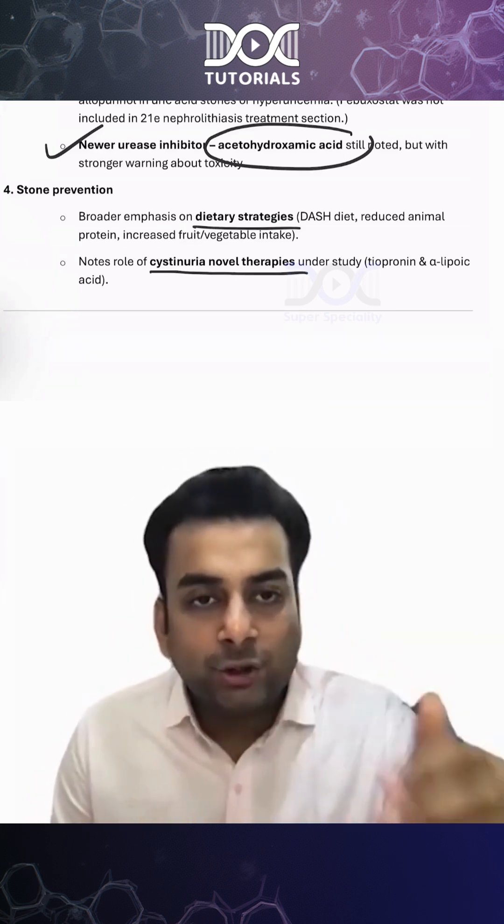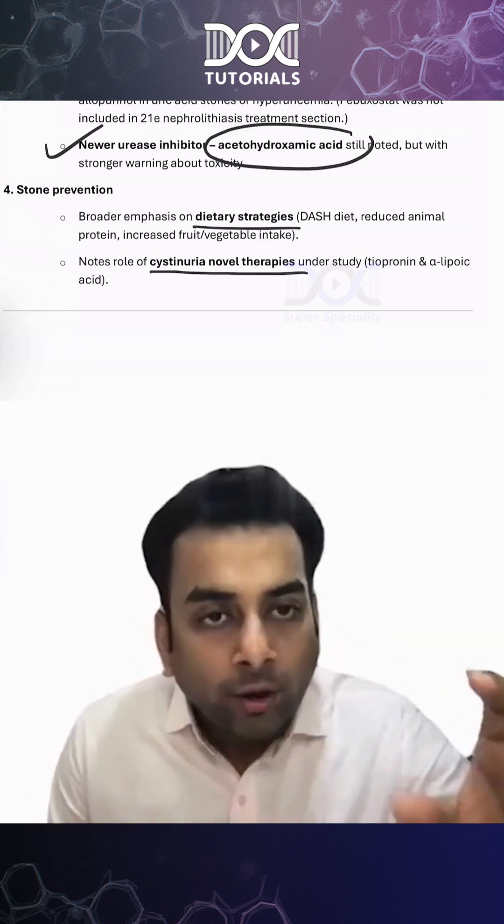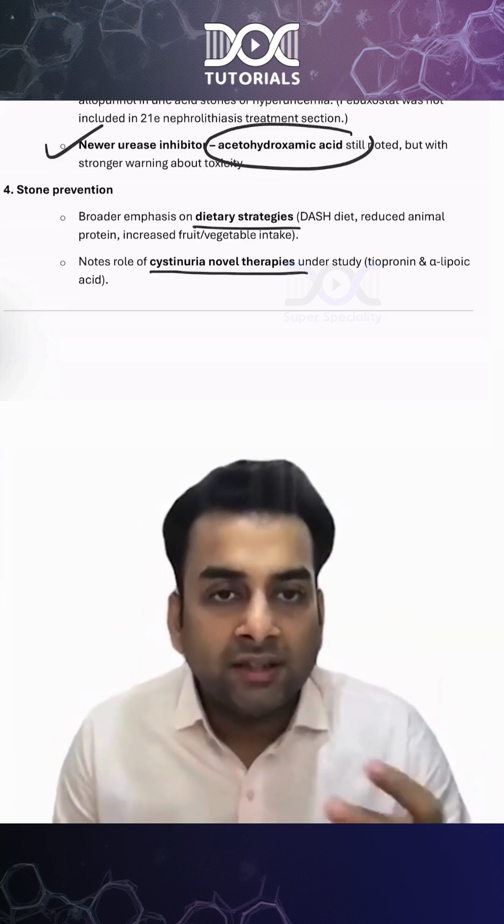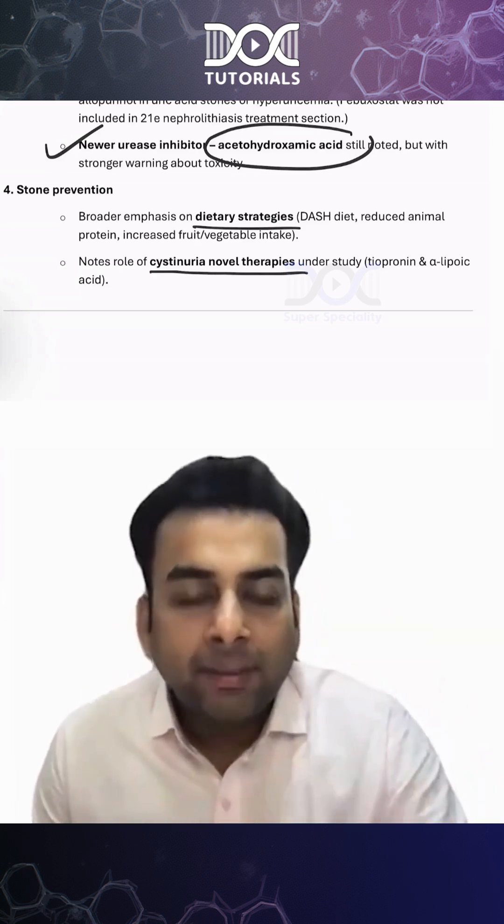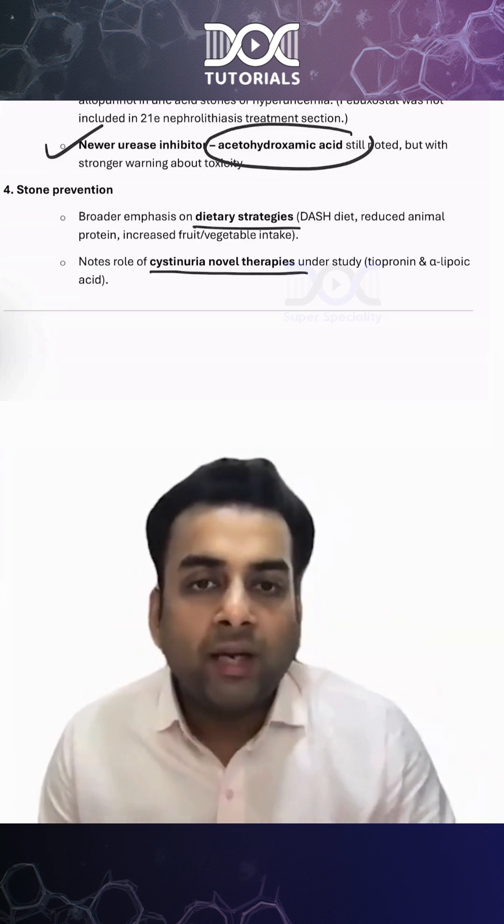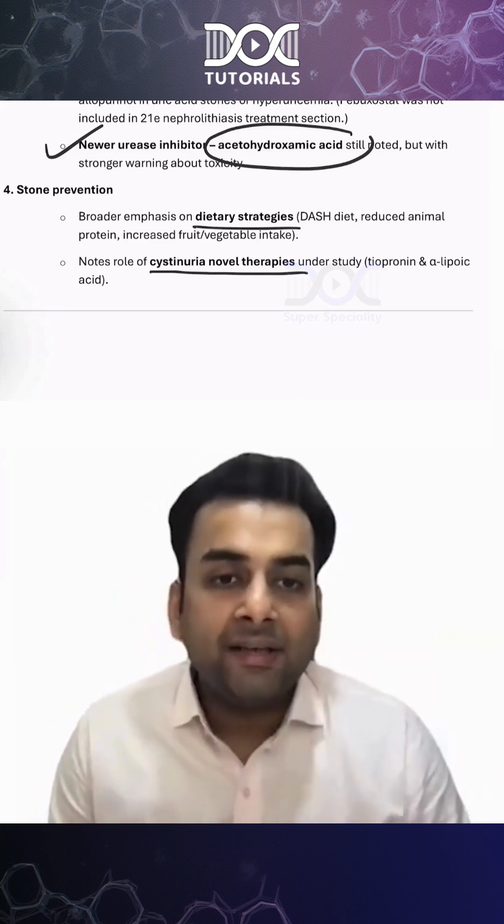These decrease the formation of cysteine stones in the kidney and are mentioned in the new edition. Tiopronin and alpha-lipoic acid are very important.